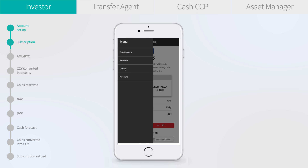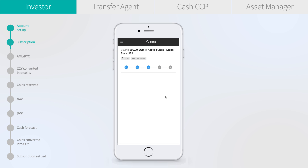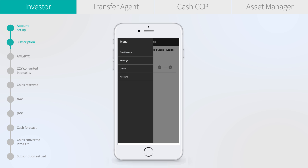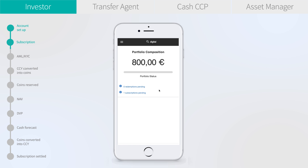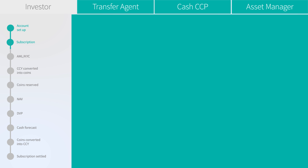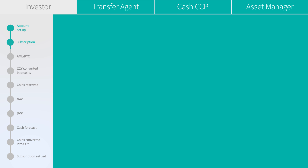We go to the menu and have a look at the order status — we see we have real-time access to the order status. Now let's go to the portfolio. We see the pending order on the portfolio, as the blockchain delivers real-time access and follow-up for all participants.